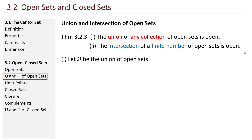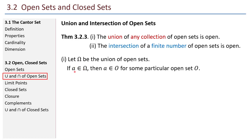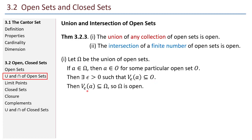Let's prove these. Number one: let omega be the union of open sets. Omega can have infinitely many — even uncountably many — open sets. If I have a number a in omega, then a must be in some particular open set O. Since O is open, there exists an epsilon so that the epsilon neighborhood about a is entirely contained in O. That means that epsilon neighborhood about a is also entirely contained within omega. So omega is open. That's a pretty straightforward proof.